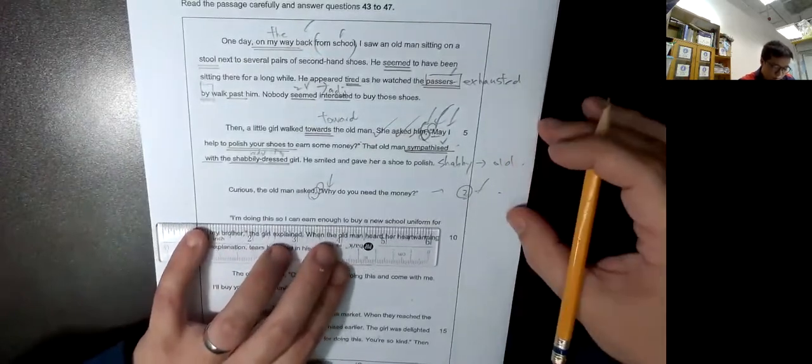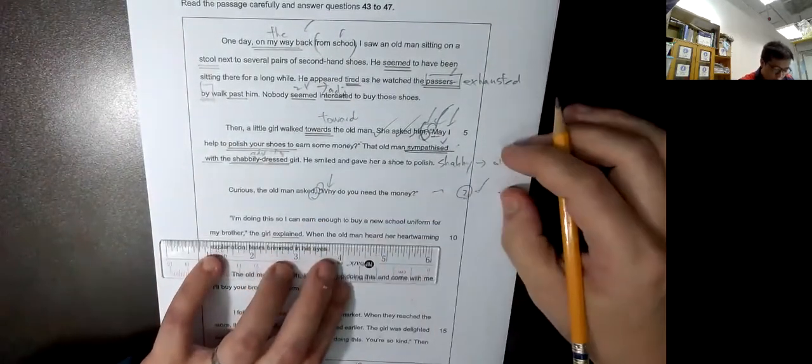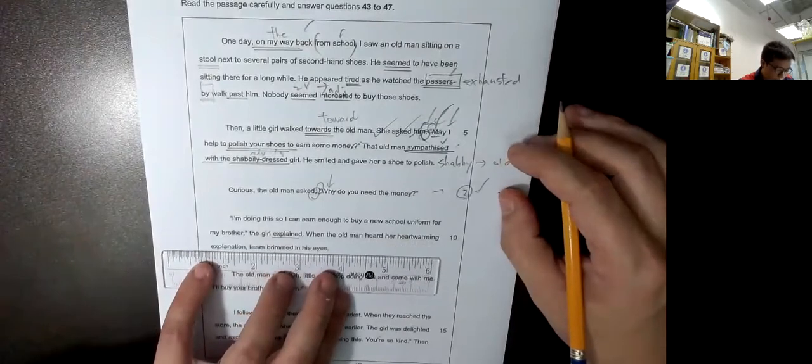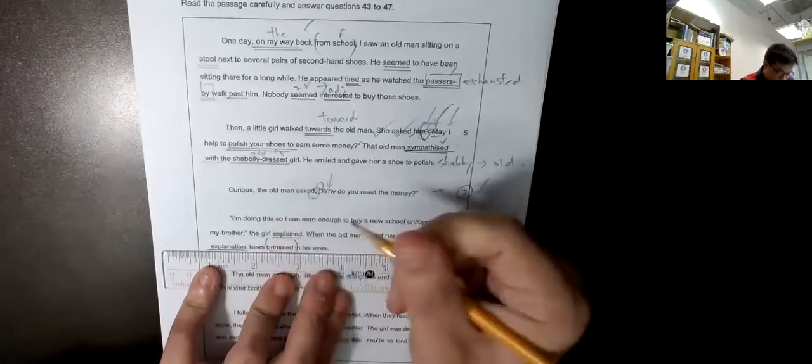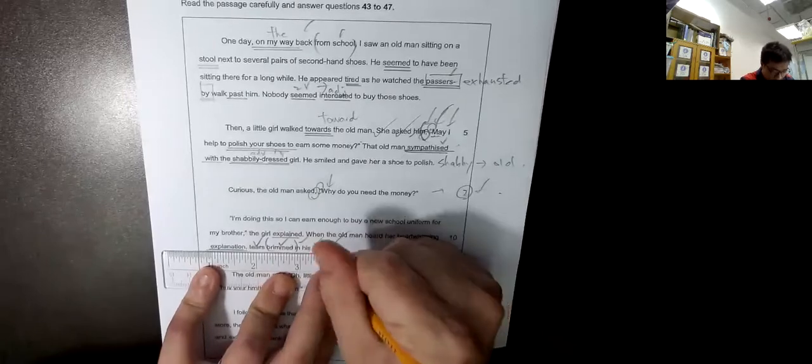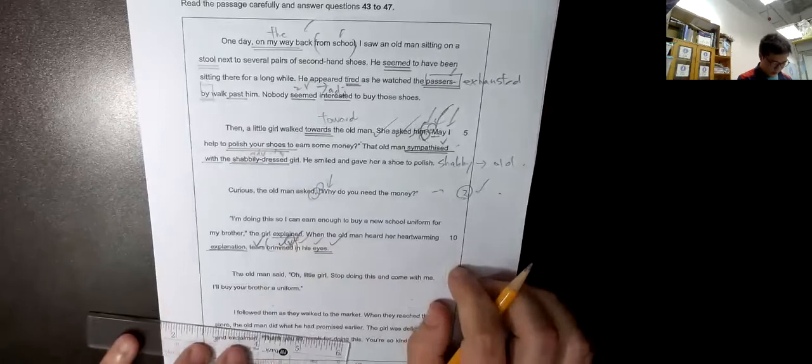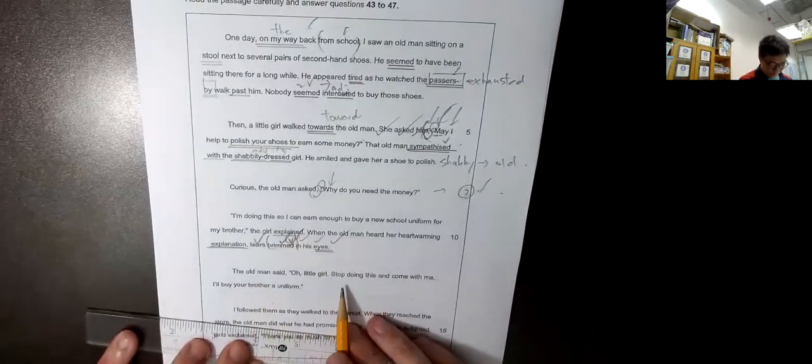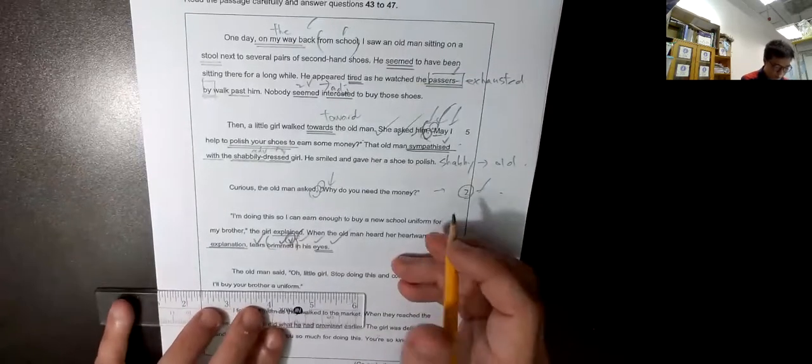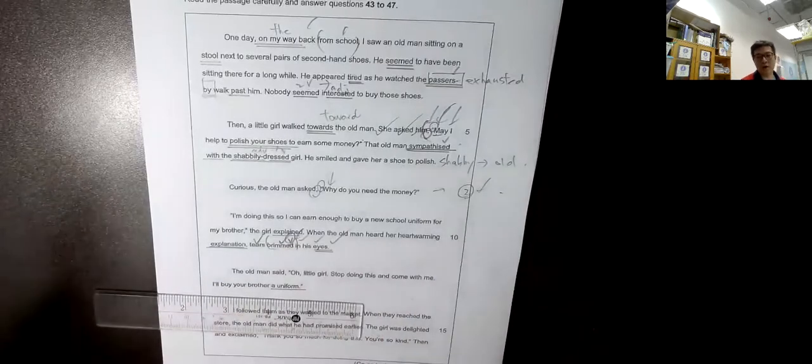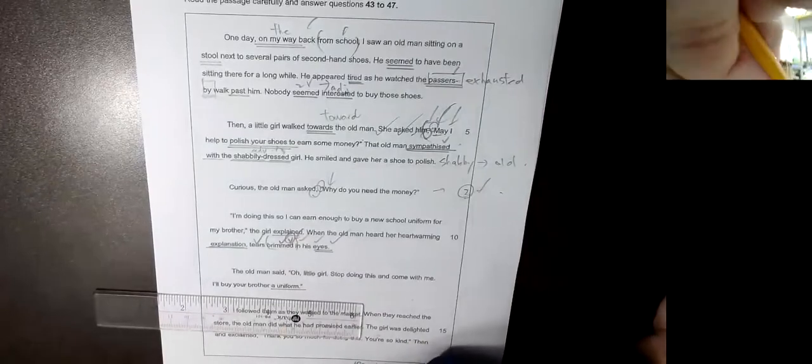I'm doing this so I can earn enough to buy a new school uniform for my brother, the girl explained. When the old man heard her heartwarming explanation, tears brimmed in his eyes. 為什麼uniform用A-N? 因為不是響音. 響不響音不是看她是不是寫法, 響不響音是看她讀出來是不是響音. 所以University也不是響音, 是師傅, 讀音而不是寫法.